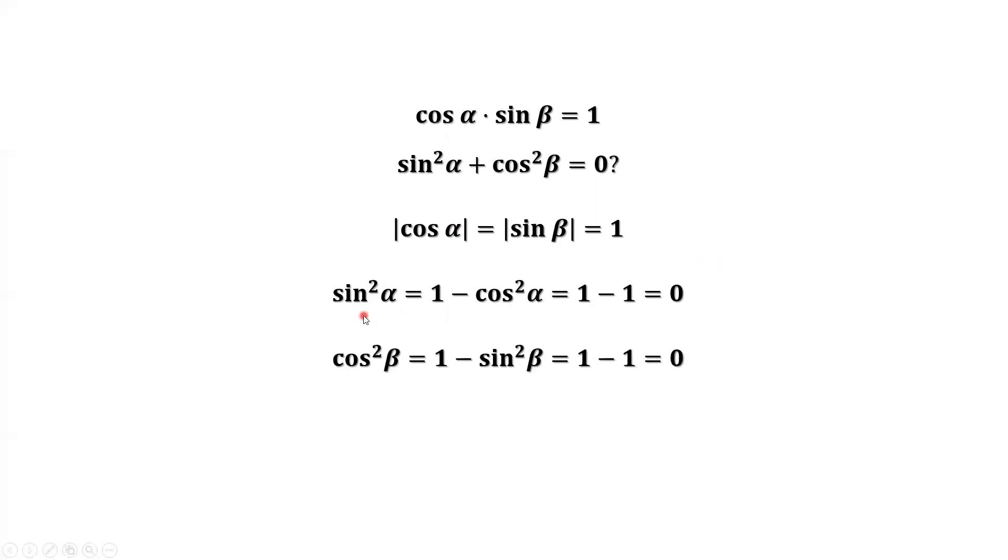So here we just derived from this one. Or you can rewrite the important identity: sine squared alpha equals one minus cosine squared alpha. Because cosine alpha absolute value equals one,